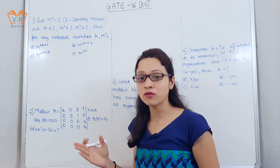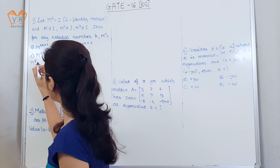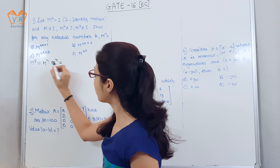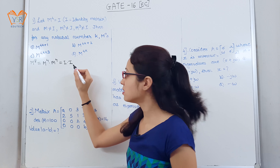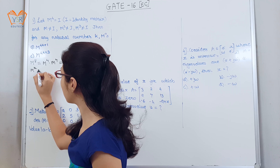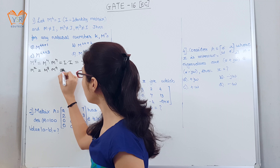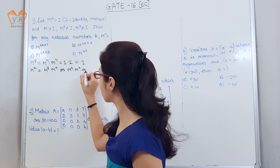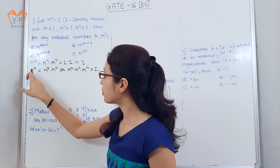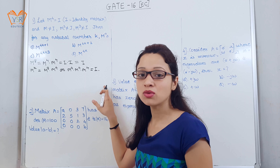m is any matrix where m³ ≠ I but m⁴ = I — that is, if that matrix is multiplied 4 times, its value equals the identity matrix. Now we will find m⁸. For m⁸, we can write m⁴ × m⁴. The value of m⁴ is I, so I × I is the identity matrix again. Similarly, m¹² = m⁸ × m⁴ = I, and for m¹⁶ also we get I. So for multiples of 4, the value will be equal to I.